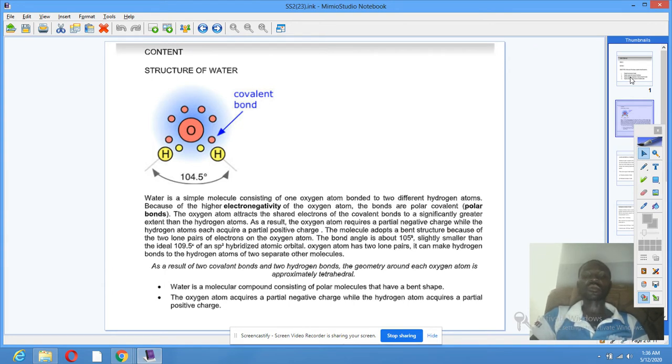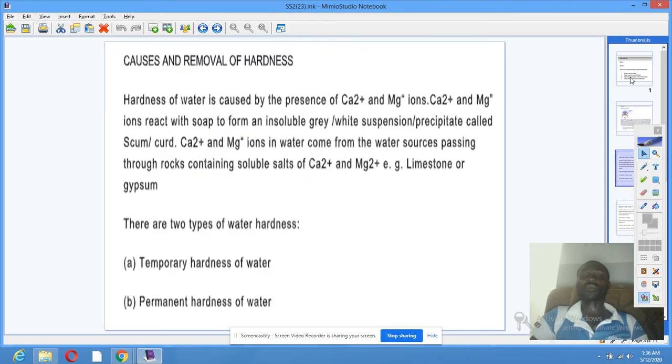There are two substances that we use for testing for the presence of water. One, cobalt 2 chloride dihydrate, which turns from blue to pink when it comes in contact with water. The second one is copper 2 sulfate, which turns from blue to white when it comes in contact with water.